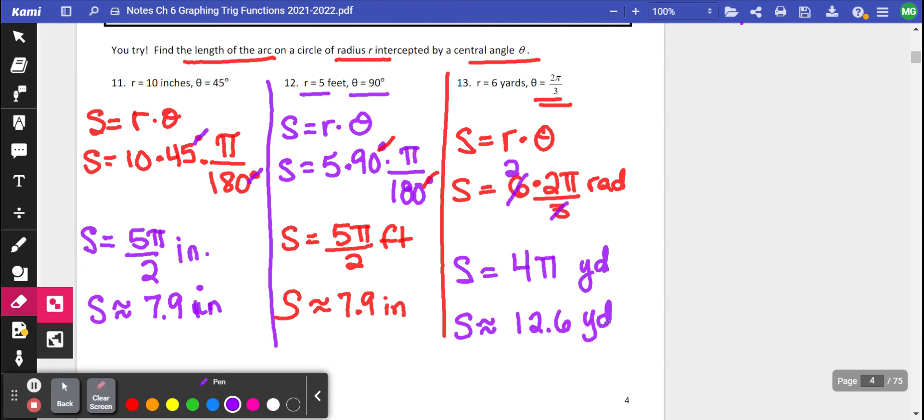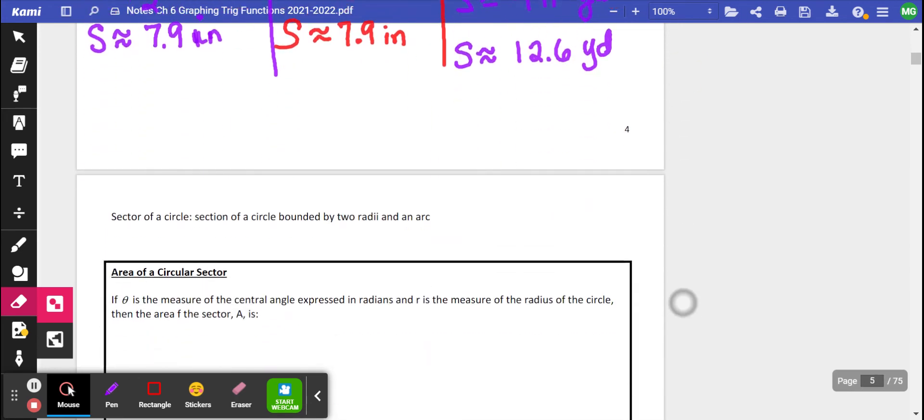So I think that's a pretty simple formula, pretty simple to remember and to use. The one thing I will caution you about is sometimes we actually give you the diameter instead of the radius. So just be careful, you just have to divide that by 2.